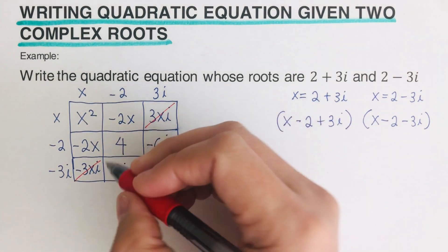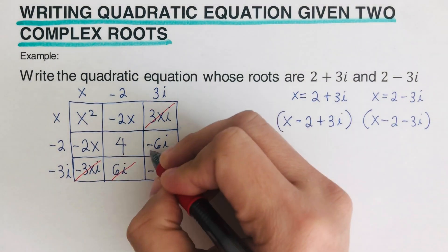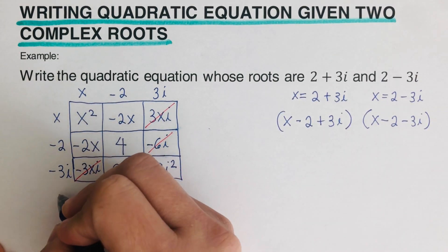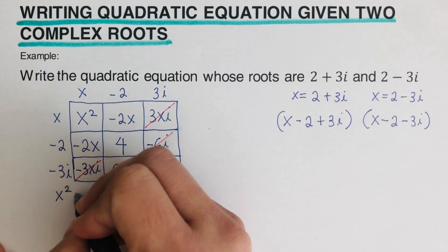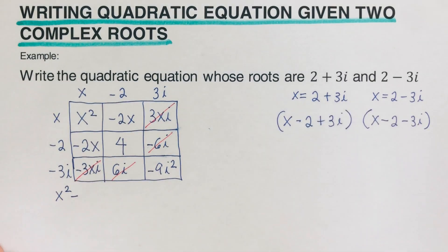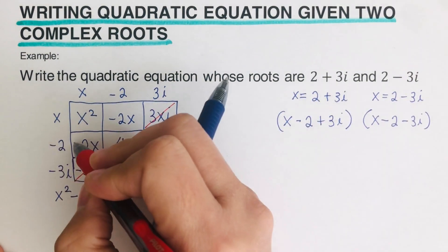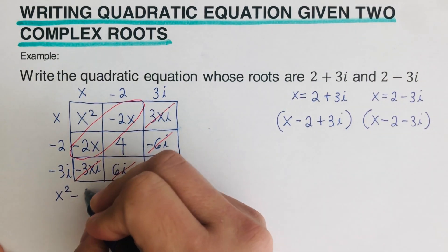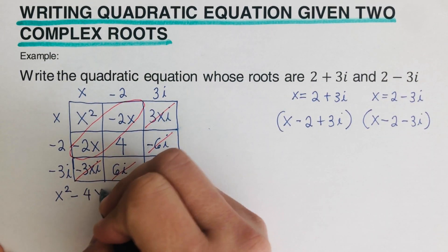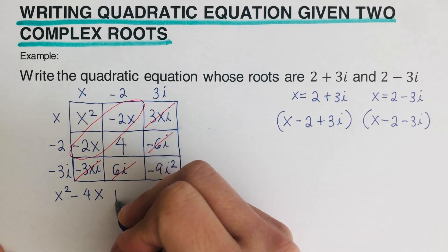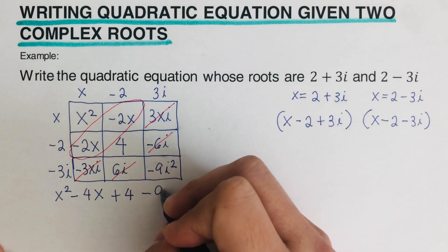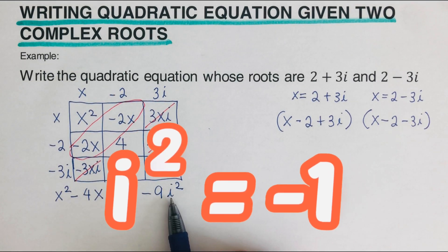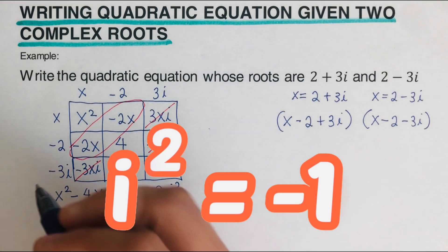The −6i and +6i also cancel. We are left with: x squared, then −2x and −2x combine to give −4x, then the constant +4, and then −9i squared. Since i squared equals −1, we substitute that in.